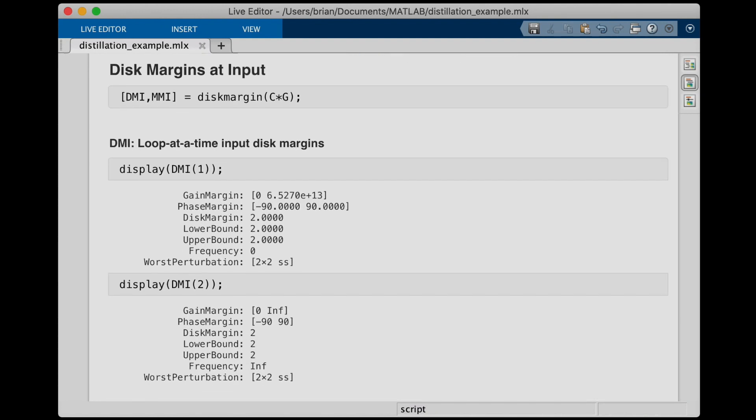The disk margin command returns both the loop at a time and the multi-loop margins. So, let's start with the input disk margin and look at the single channel loop at a time margins. This is basically saying, what if we just vary one input and see how the system performs? The resulting disk margin is huge. It's infinite gain margin and 90 degrees of phase margin for both inputs, which is expected because our open loop system acts just like an integrator.